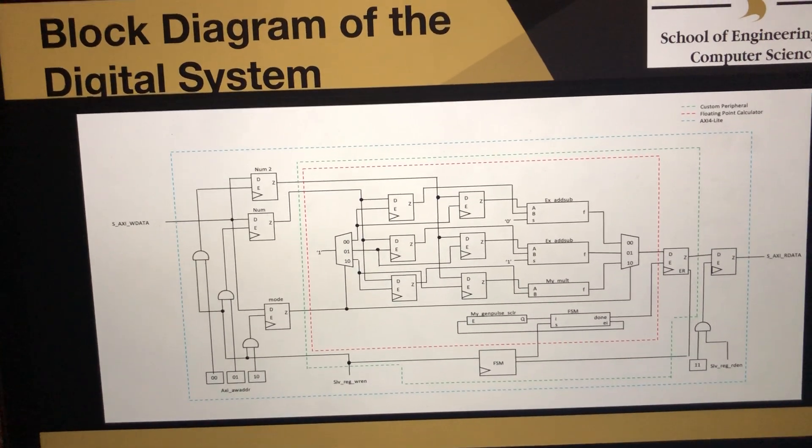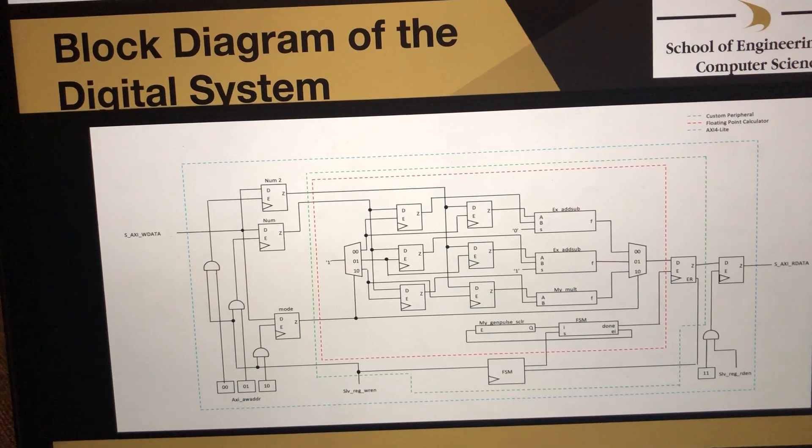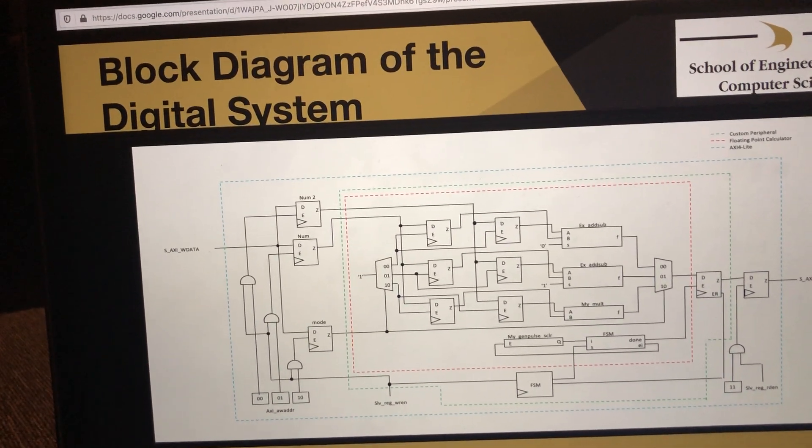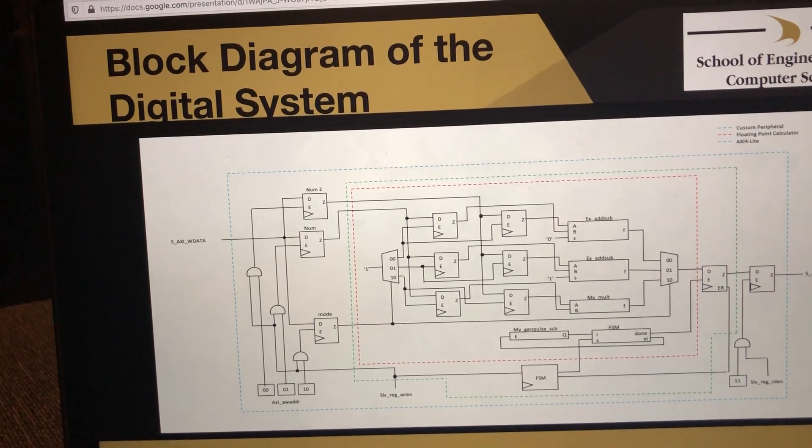Data starts on the left, going into the AXI write data signal. Three 32-bit words are fed into num2, num, and mode.